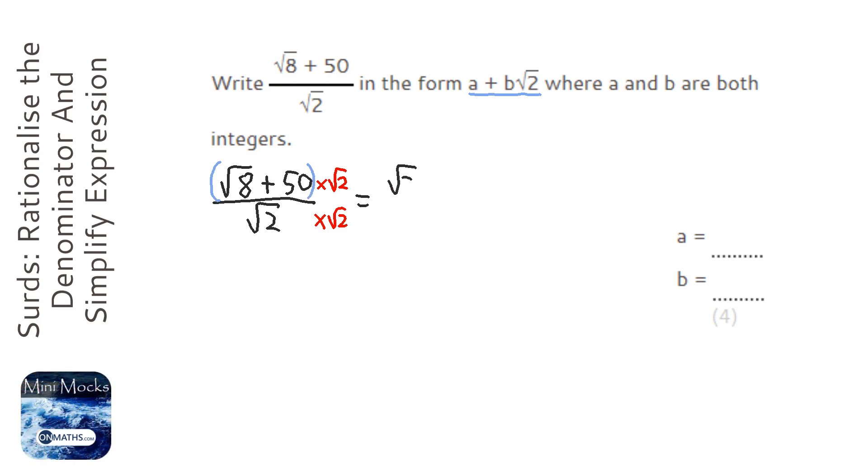So, when we times them by root 2, it would be root 2 brackets root 8 plus 50, and at the bottom, root 2 times root 2 is root 4, which just gets rid of the root, it's 2.